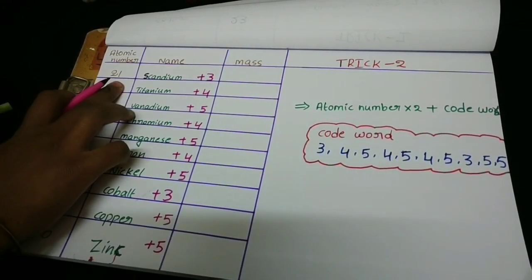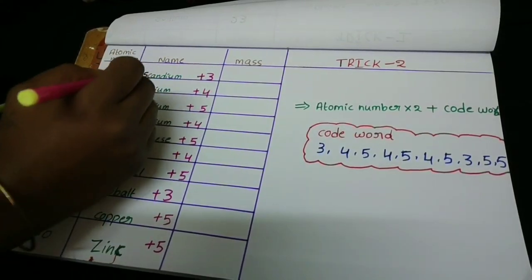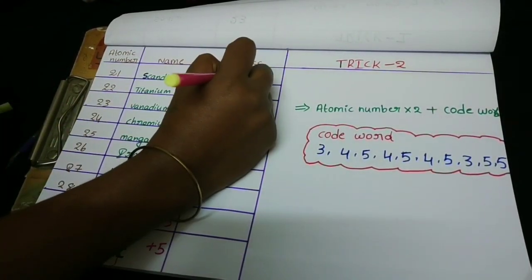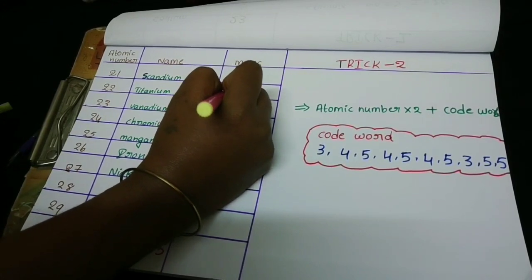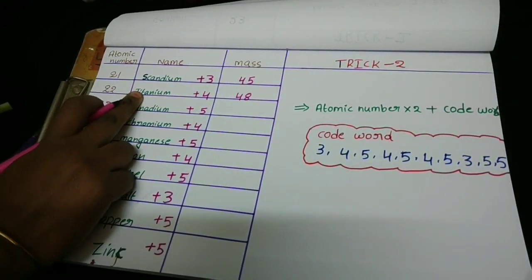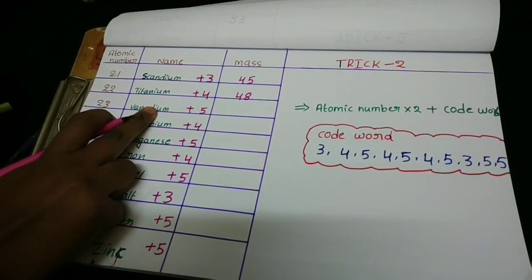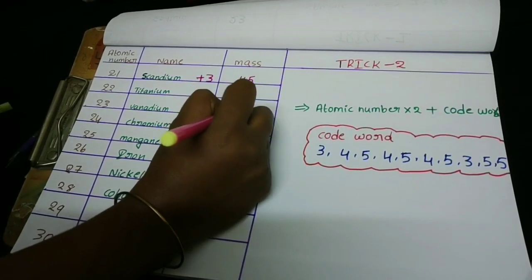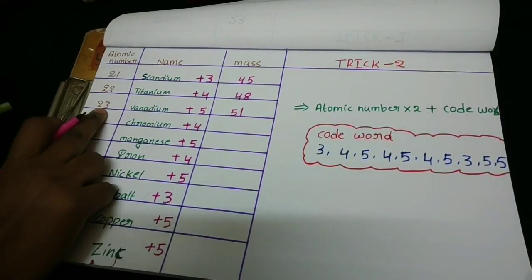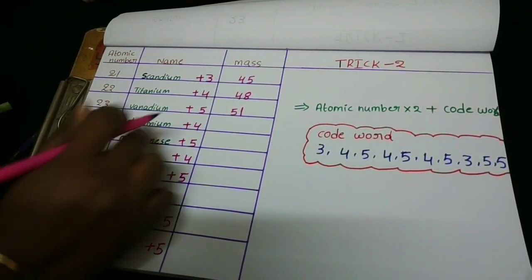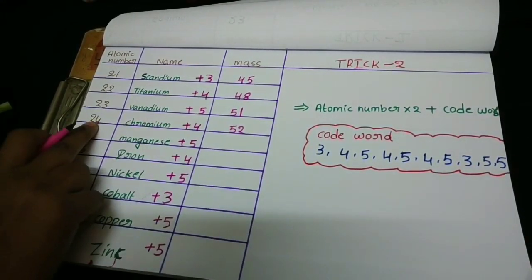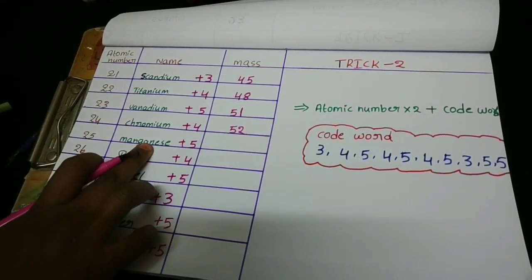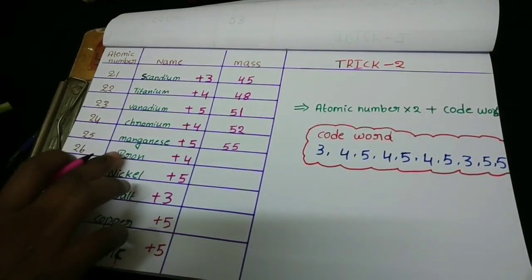Let's apply Trick 2. Scandium: atomic number 21. 21 × 2 = 42, 42 + 3 = 45. 45 is the atomic mass of scandium. Titanium: 22 × 2 = 44, 44 + 4 = 48. 48 is the titanium atomic mass. Vanadium: 23 × 2 = 46, 46 + 5 = 51. 51 is the vanadium atomic mass. Chromium: 24 × 2 = 48, 48 + 4 = 52. 52 is the chromium atomic mass. Manganese: 25 × 2 = 50, 50 + 5 = 55. 55 is the manganese atomic mass.